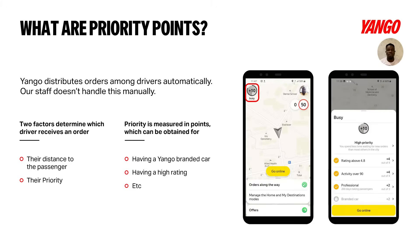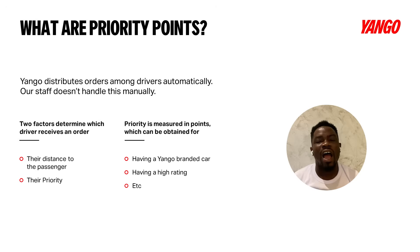A combination of your rating, activity, how long you've been driving on the service, and whether your car is branded or not gives you what we call priority points. The higher your priority points, the quicker and faster you get ride requests. If you drop your rating, drop your activity, and don't drive actively over a certain period, you lose priority points.